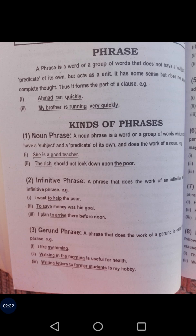Number two is the infinitive phrase. A phrase that does the work of an infinitive is called an infinitive phrase. For example: 'I want to help the poor,' 'To save money was his goal,' and 'I plan to arrive before noon.' An infinitive is formed when we use 'to' with the first form of the verb, usually when two verbs appear in one sentence. So 'to help,' 'to save,' and 'to arrive' are infinitive phrases.